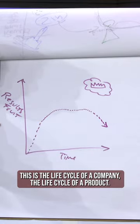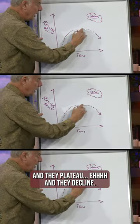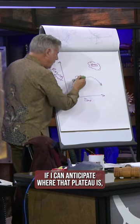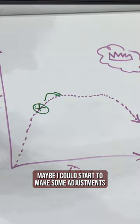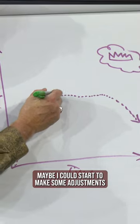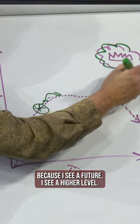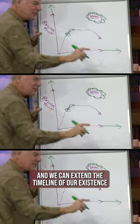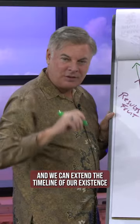This is the life cycle of a company, the life cycle of a product. And they plateau, and then they decline. If I can anticipate where that plateau is, maybe I could start to make some adjustments because I see a future. I see a higher level. I see that we can get more results, and we can extend the timeline of our existence.